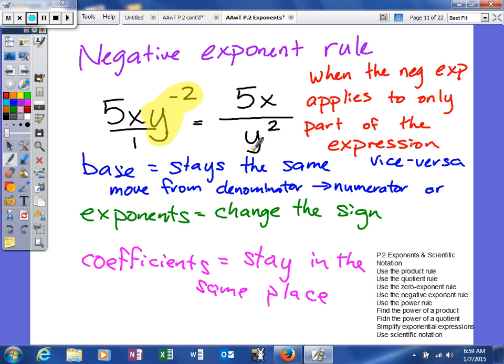And the only thing that affects, or the only thing that is affected by that, it's not the base itself, but it's the sign of the exponent. So what happens is the exponent, the sign will change. The coefficients will actually remain in the same place. So the only thing that you're going to move is the variable, or the term, that has a negative exponent.